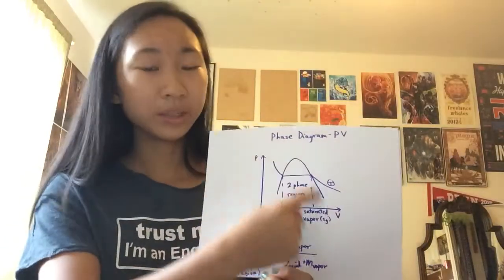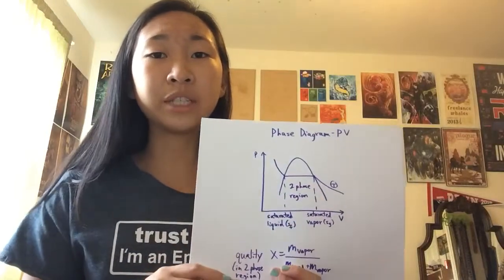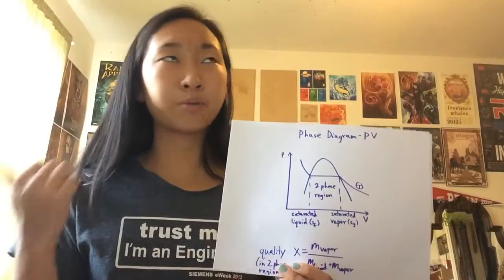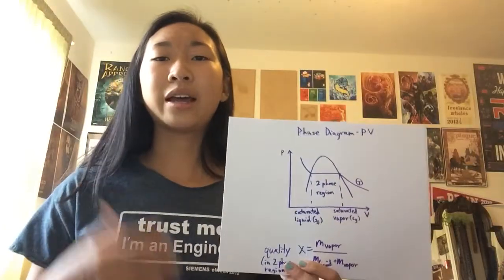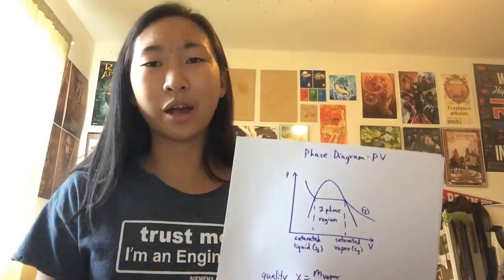First of all, this vapor dome is the 2D representation, the 2D projection onto the PV diagram of this 3D PVT surface, pressure, volume, temperature, phase diagram that will show you the phase at any point on that graph.